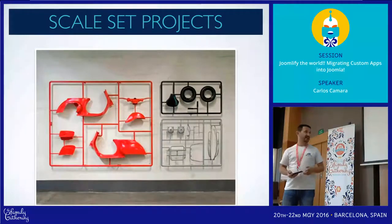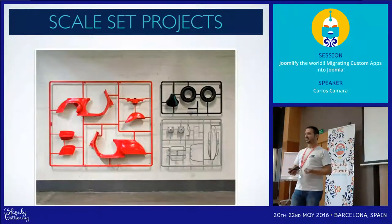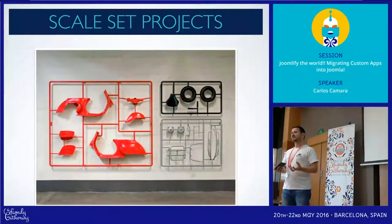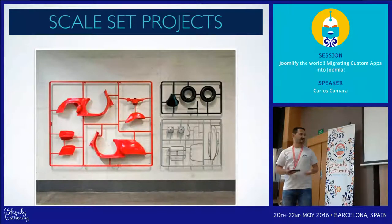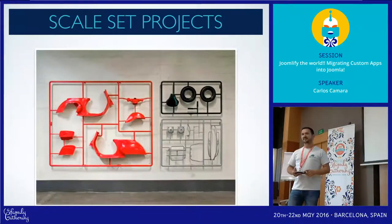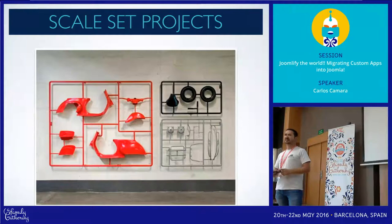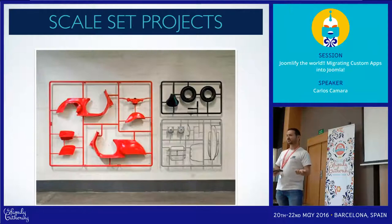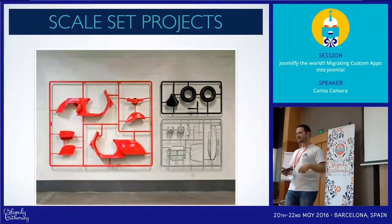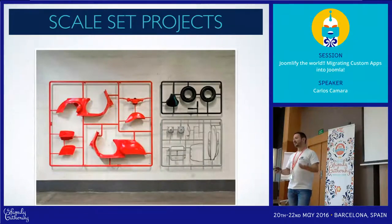Skyset projects are those in which the core business process logic cannot be found in the extensions directory. For instance, someone might need an issue tracking system that sends emails on new issues, requires specific file uploads, and assigns points to every issue — difficult stuff that cannot be done with anything available in the Joomla extensions directory.